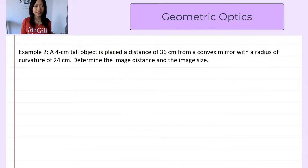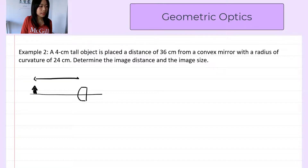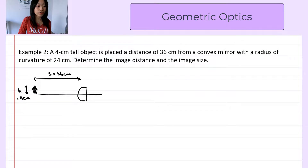Now let's look at the second example. Here we have a convex mirror. The same object is placed a distance of 36 cm from the convex mirror. The mirror has a radius of curvature of 24 cm. We also want to determine the image distance and the image size. In the sketch, s is +36 cm and h = 4 cm. Since we have a convex mirror, r is negative, so r = −24 cm.